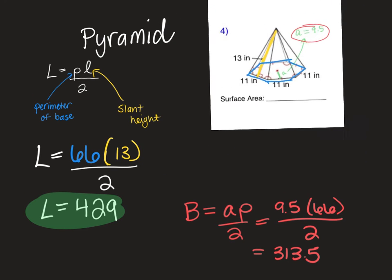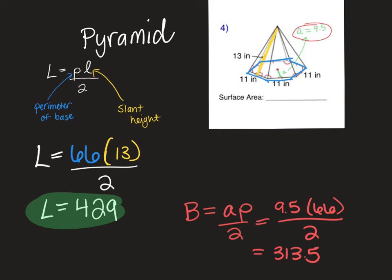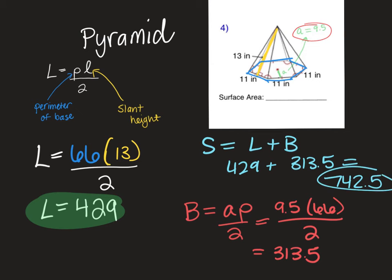Yeah. So, we're just going to add the two together. So, S equals L plus B. And, really, though, you guys have a good concept of, like, lateral surface area, area of the base, of finding that now that you've done it with the prism so much. This is one of those chapters that starts off a little bit more difficult and it gets easier as it goes. So, S equals L plus B. So, we're doing 429 plus 313.5. Yep. 742.5.